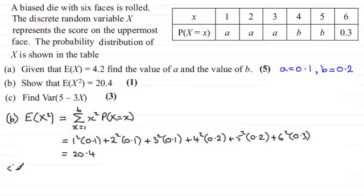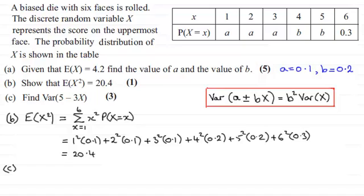Now in part C, we're asked to find the variance of 5 minus 3X. When you get something like this — a combination of values — you should be familiar with this particular formula. The variance of a constant A plus or minus another constant B times a random variable X is equal to B squared times the variance of X. So in this example, A is the 5, and B is just the 3, so we're going to end up with this being equal to 3 squared times the variance of X.